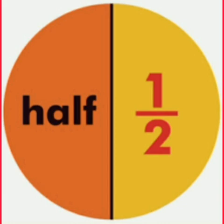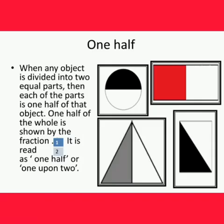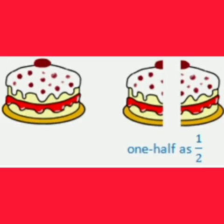Let's learn about one half. When any object is divided into two equal parts, then each of the parts is one half of that object. One half of the whole is shown by the fraction 1 upon 2. It is read as one half or 1 upon 2. Let's see some examples: one half cake, one half apple.